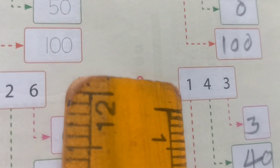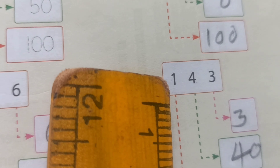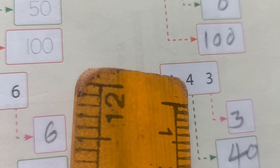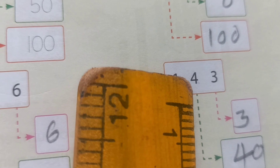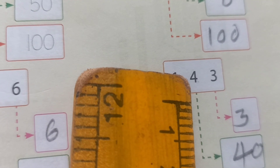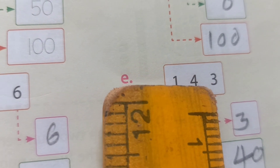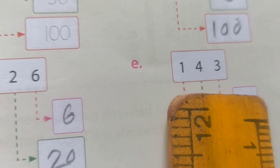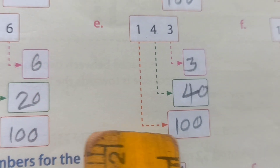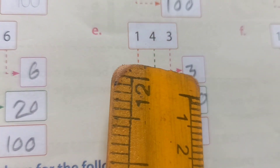This one 1 number place value: 100. This one 4 number place value: 4 tens means 40. And 3 ones. So we solve: 1 is 100, 4 is 40, and 3 is 3 ones.